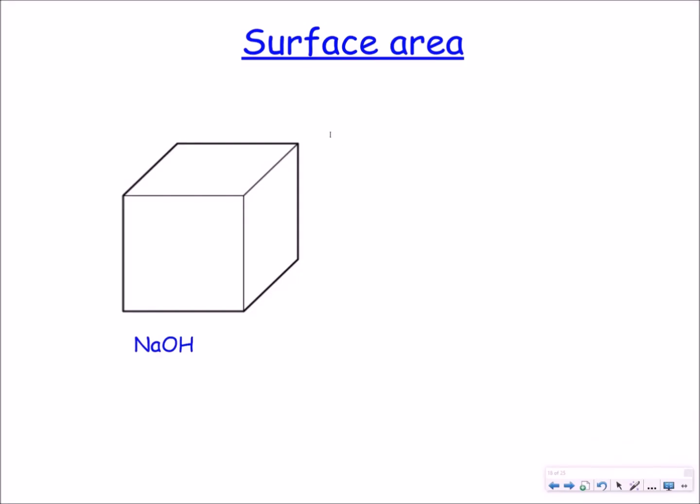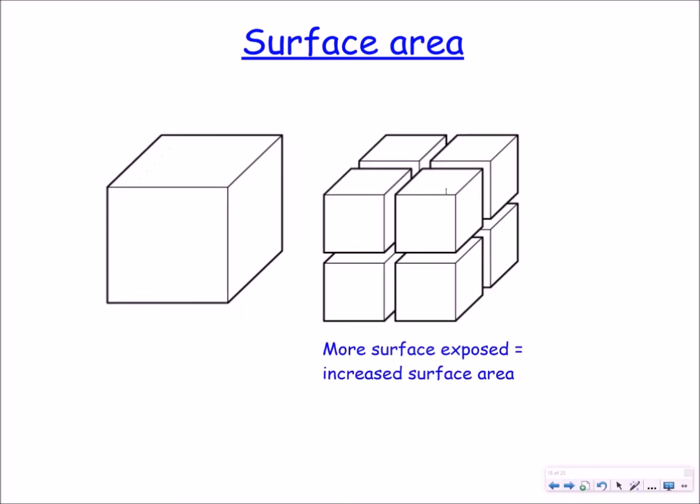Okay, so our final factor is surface area. So here I've got a block of sodium hydroxide or a cube. This is going to react with any acid and I want you to look at this block and imagine it in 3D. You can see that it's got 6 faces. You can cut this up into 4 smaller cubes. Each one of these cubes now has 6 faces so you've got 4 times 6, you've got 24 faces in total. The surface area has increased which means that the rate of reaction is also going to increase.